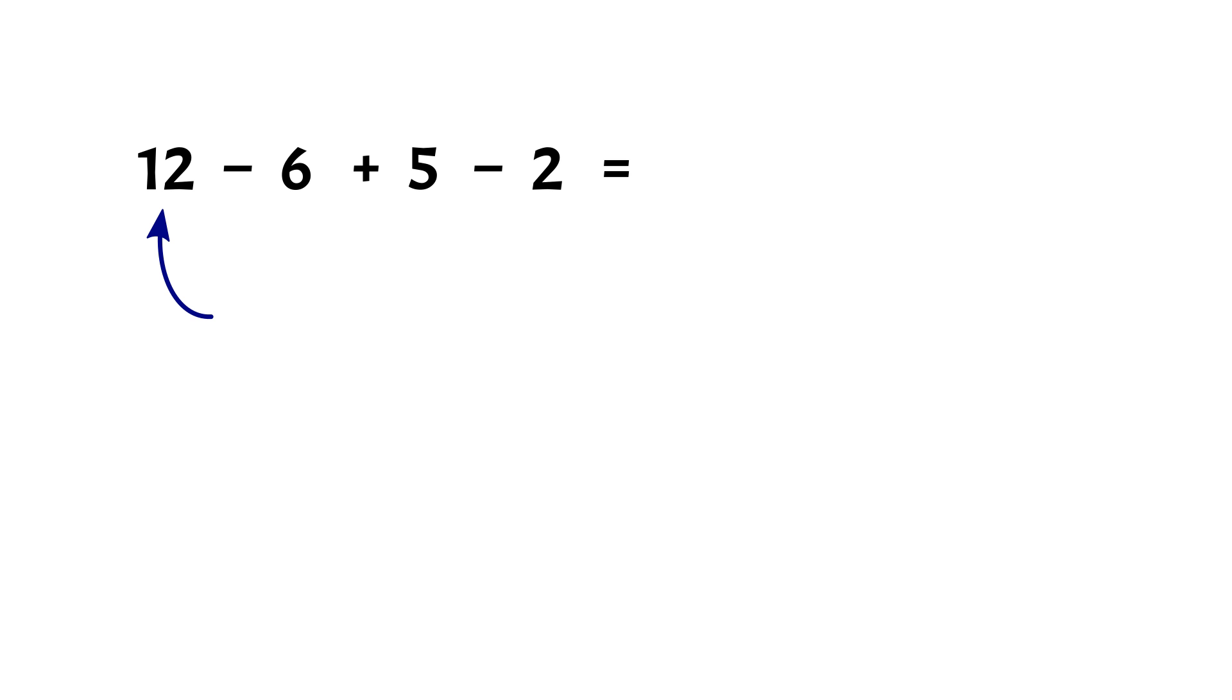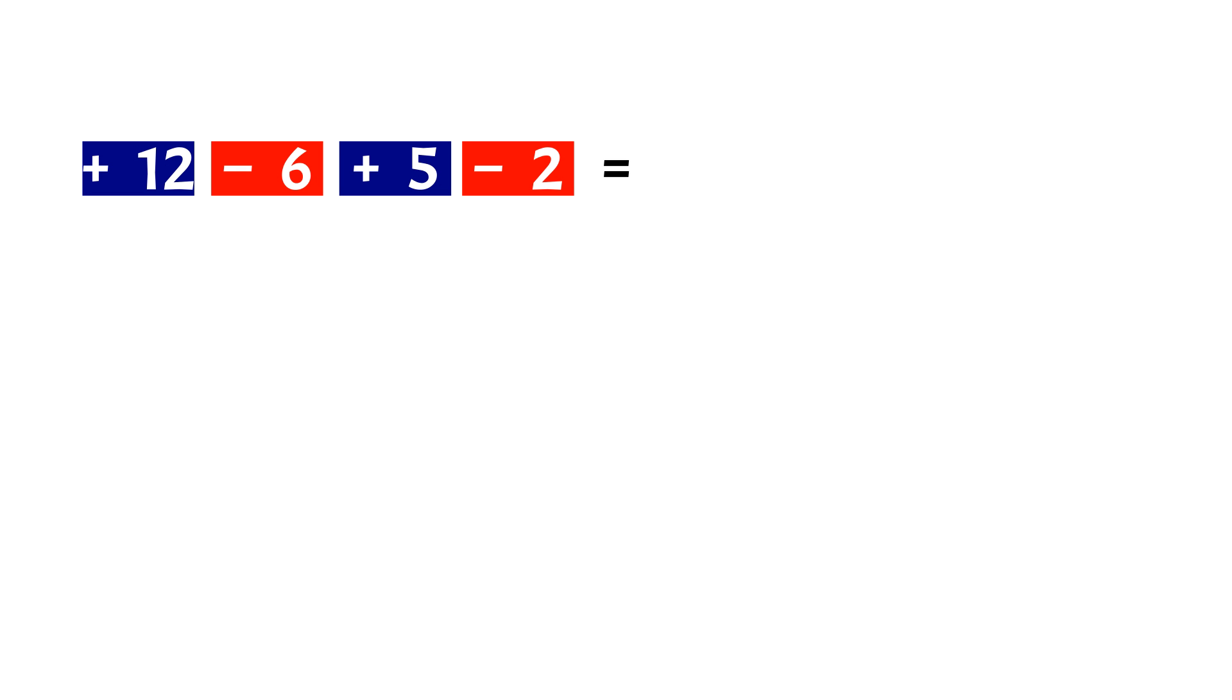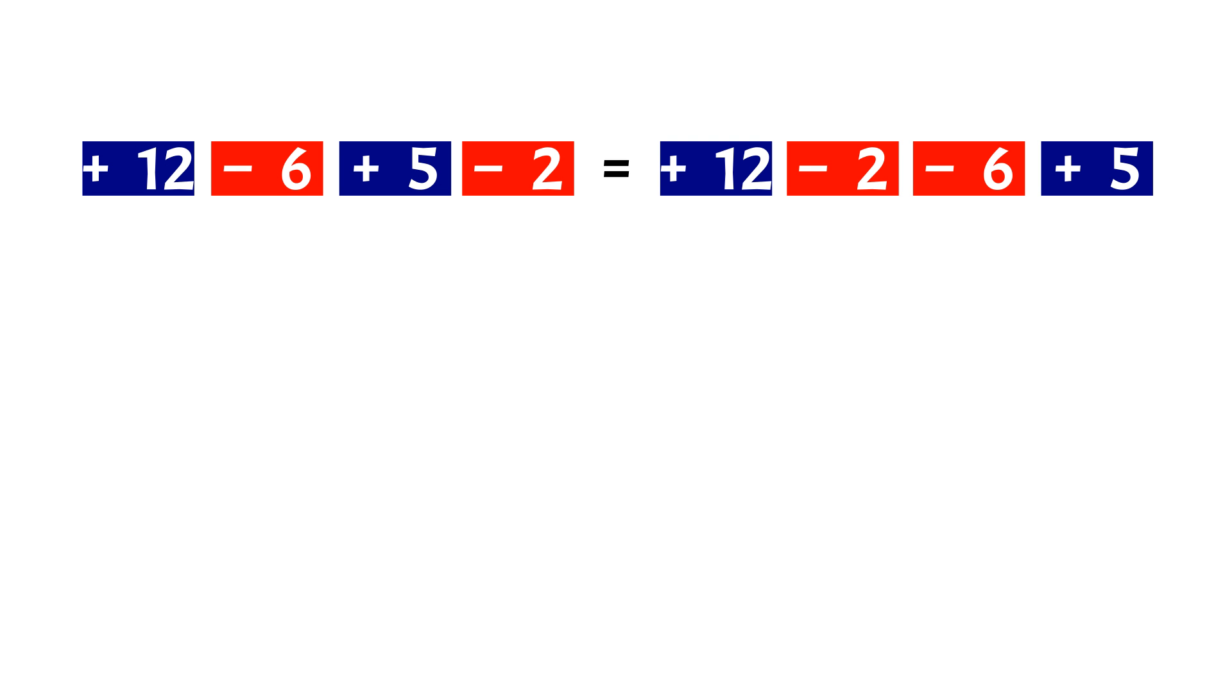First, if the first term is positive, add an addition sign before it. How if it's negative? In that case, change the sign to subtraction. Now every number has operation before it, so group each pair together. Then we can rearrange the group as we please.